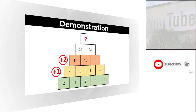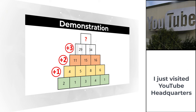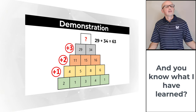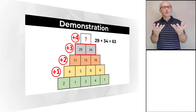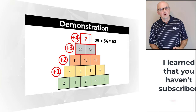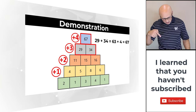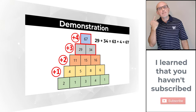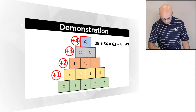Based on this information, the missing value can be calculated as 29 plus 34 plus the value of the increment, which would be plus 4, which equals 63 plus 4, which equals 67. So the correct choice here is Choice C, 67.